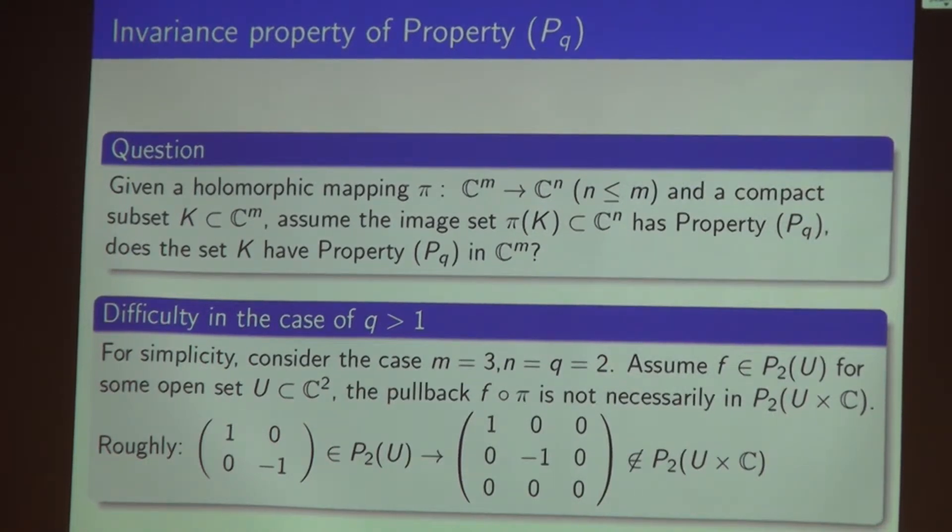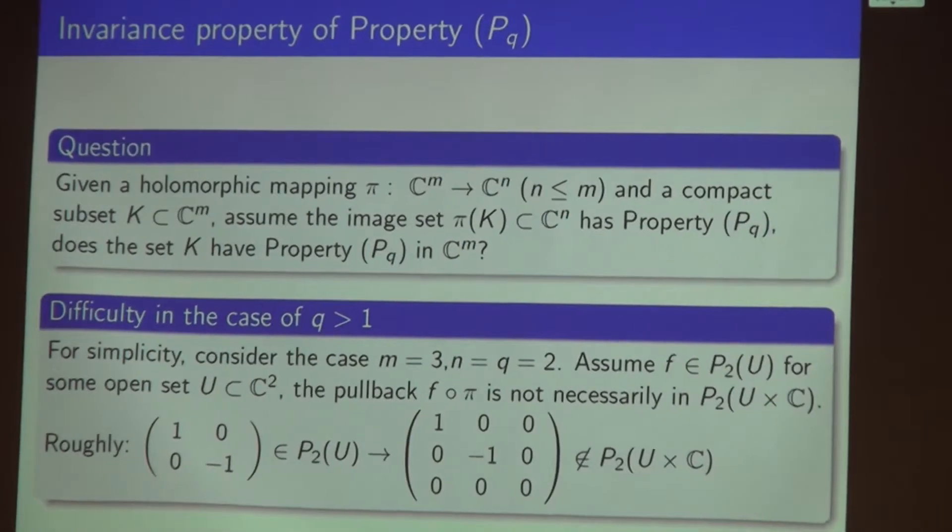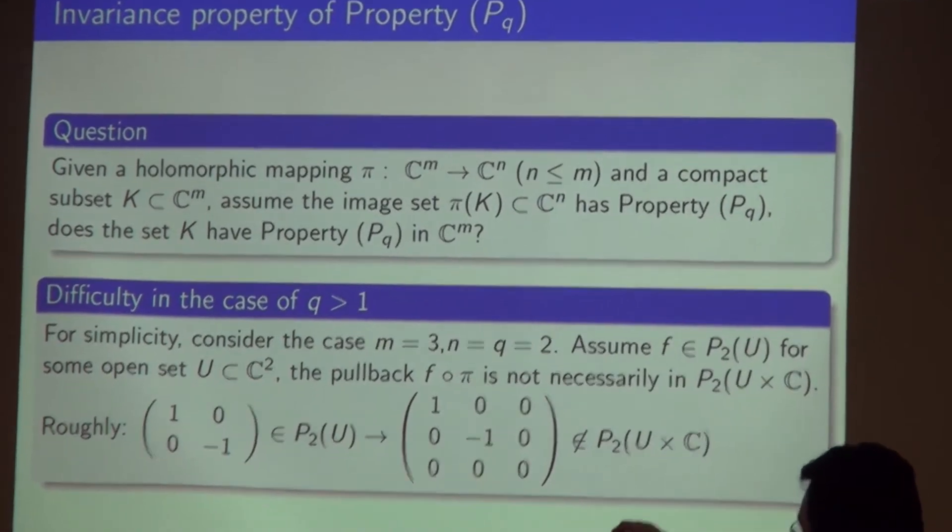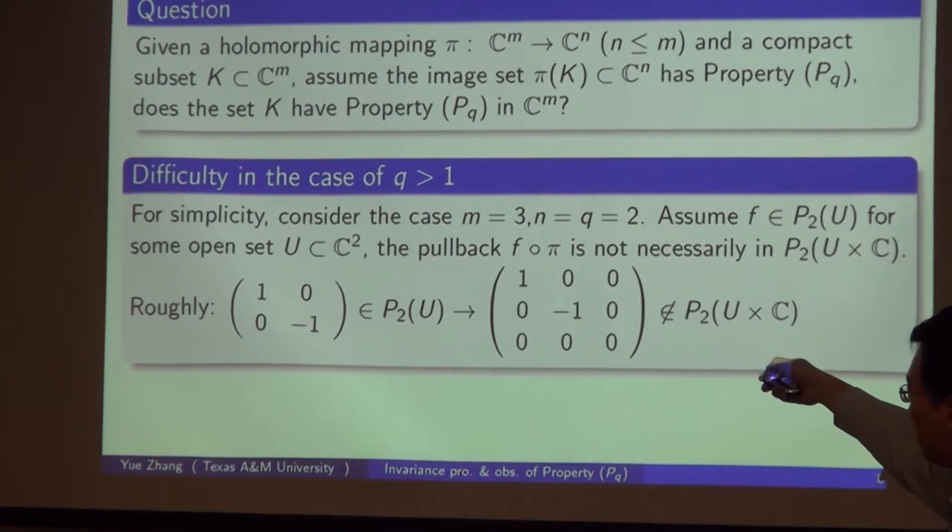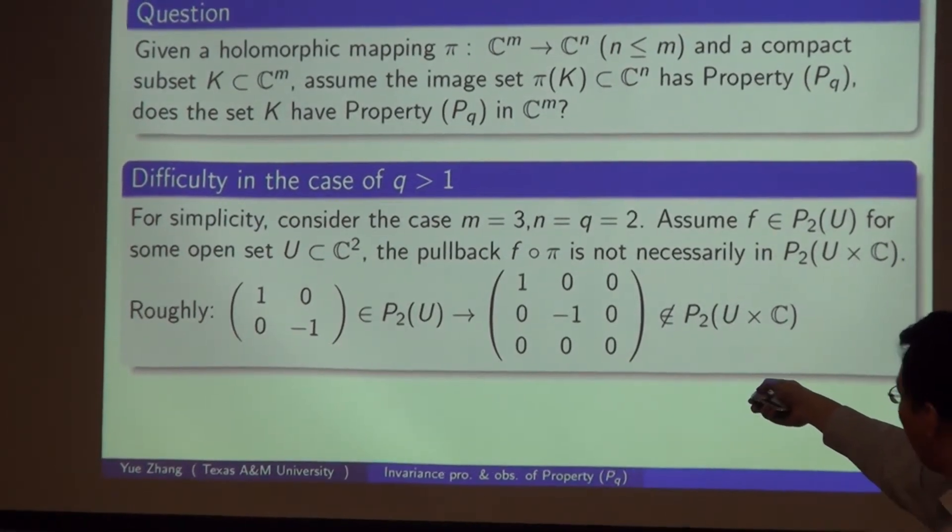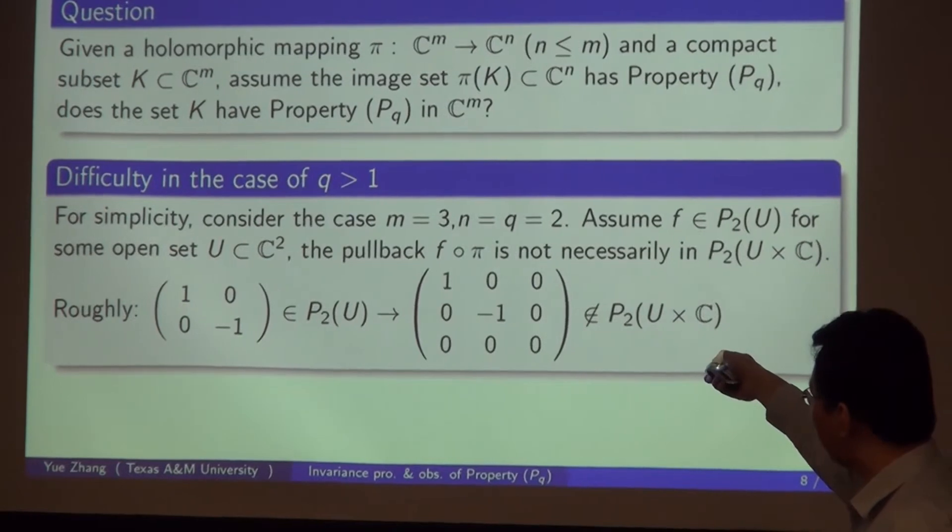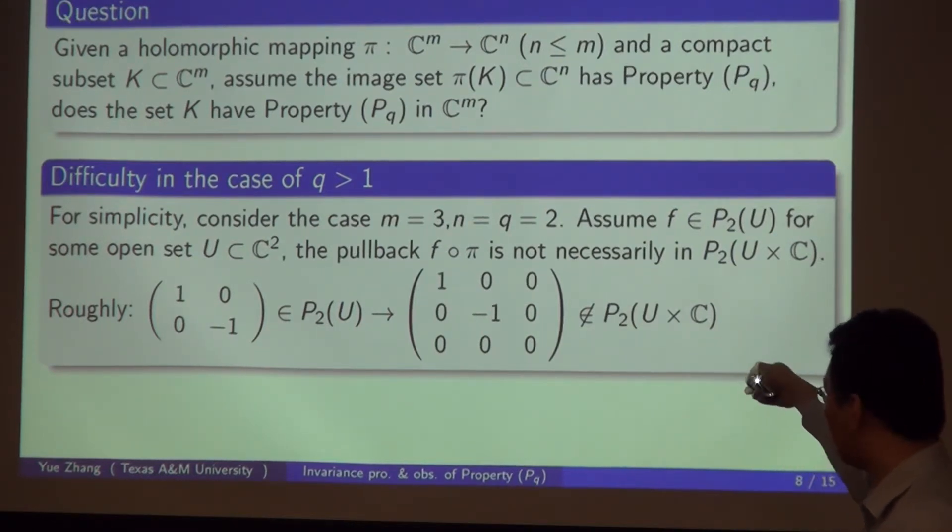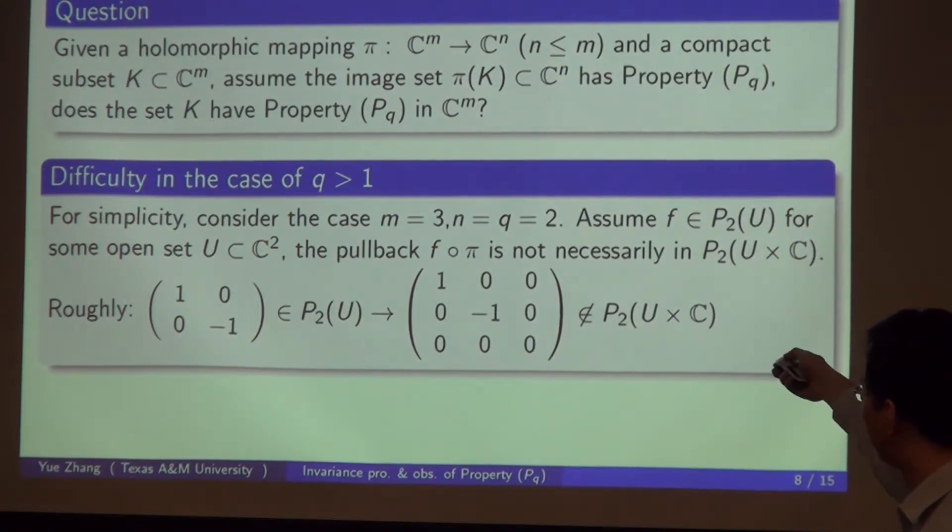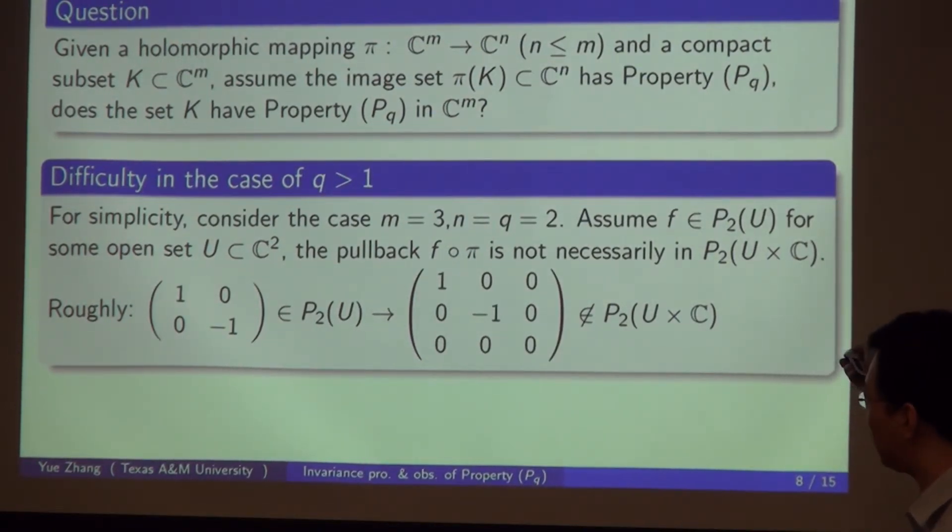The difficulty in higher level forms is that if you consider a function in a lower dimension, let's say F, roughly speaking, if we assume the complex Hessian of F is, say, (-1, -1, 0, 0), it is in P_2(U). But if you consider the pullback F composed with pi, suppose pi is a trivial projection, you can simply compute that the complex Hessian of this pullback F composed with pi is naturally adding zeros to the original complex Hessian.